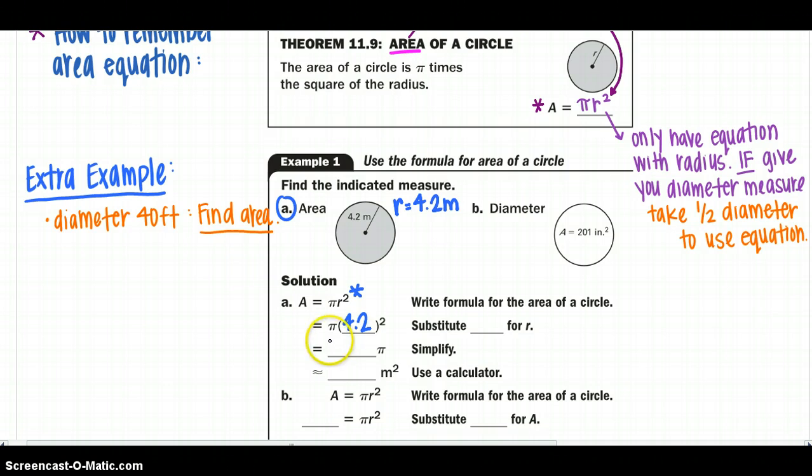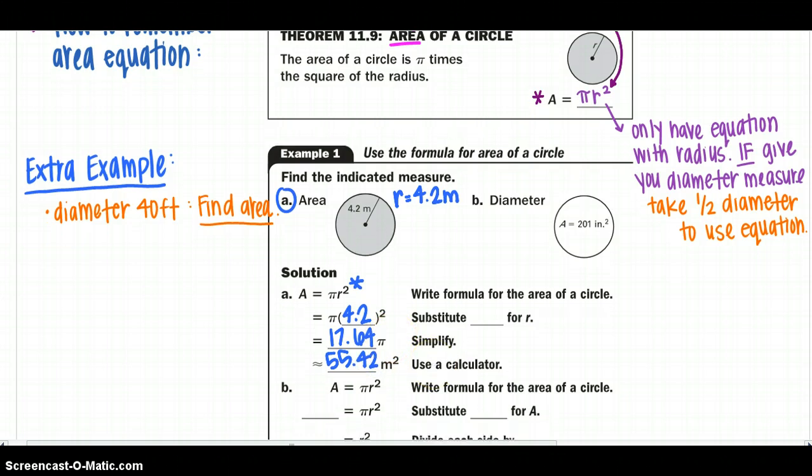So you would get 17.64 pi, and remember that is in terms of pi, and if we want an approximate answer, we would get 55.42, and remember to use that pi button on your calculator instead of rounding from the beginning.